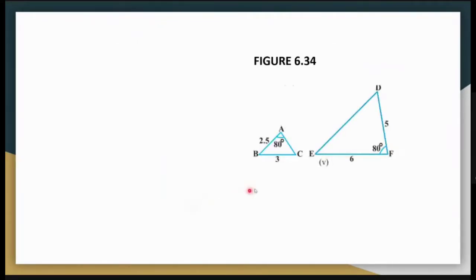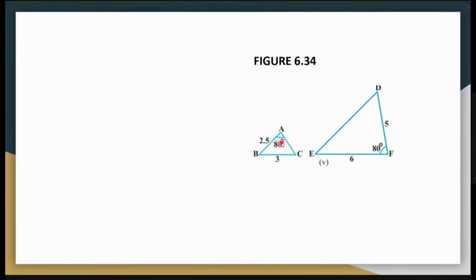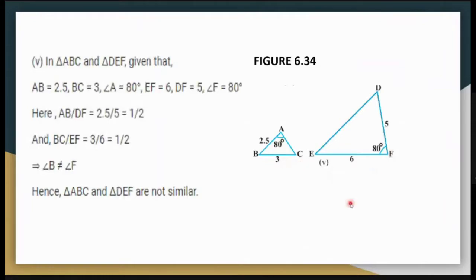Let us see the second part of this question. I need to check whether this triangle is similar to the other one. The SAS rule says that if two sides are proportional and the angle between them is equal, then the triangles are similar. Here I have side 2.5 and double of that is 5; side 3 and double of that is 6 — so the SS part is fulfilled. But angle A is not the included angle. Had angle B been equal to angle F, the triangles would have been similar. Since angle B is not equal to angle F, the triangles are not similar.